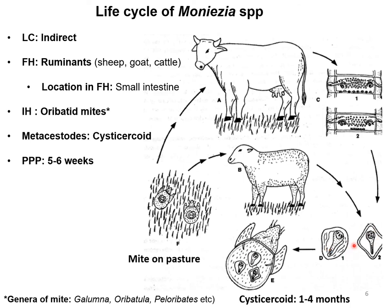When the forest mite ingests the eggs of this parasite, the cysticercoid develops within one to four months. This cysticercoid is the infective stage for the final host. The final host becomes infected after ingesting the forest mite containing cysticercoids in its body cavity. After ingestion, the cysticercoid develops into a mature parasite, which ultimately starts producing gravid proglottids.